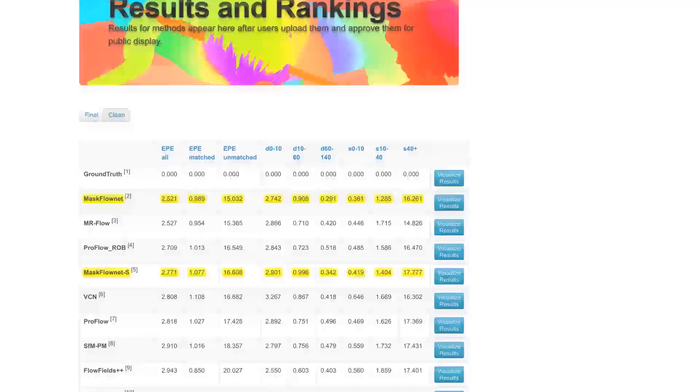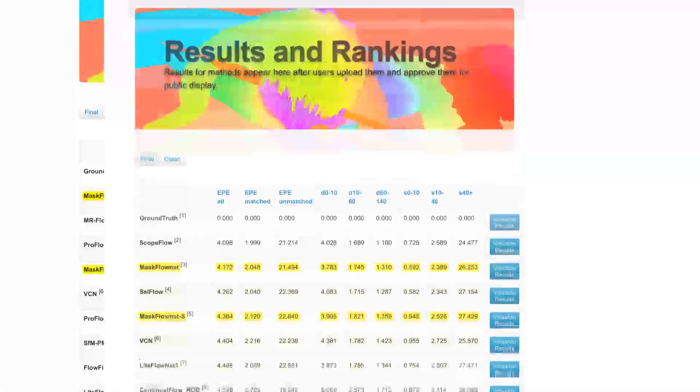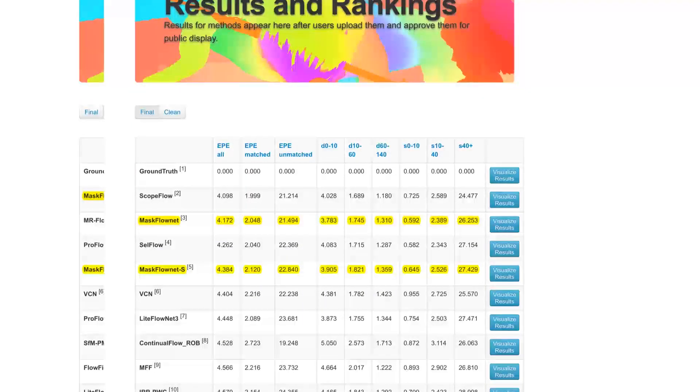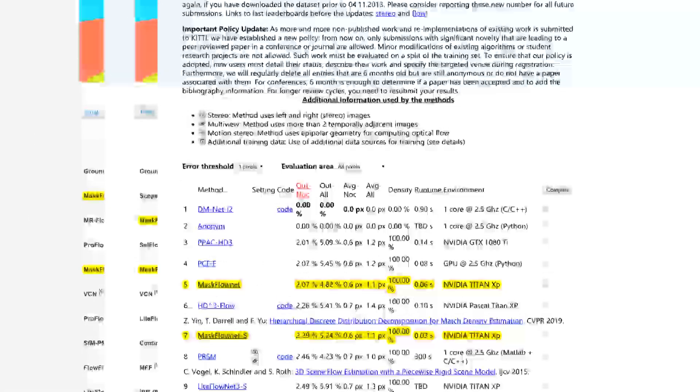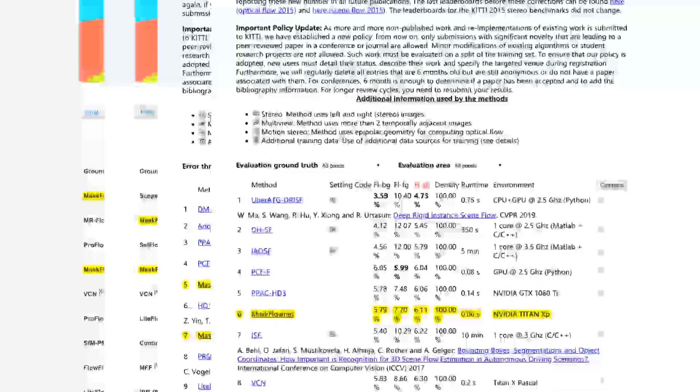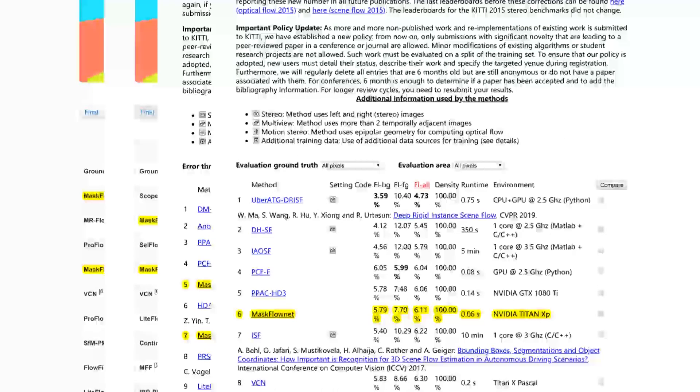At the time of submission, MaskFlowNet surpasses all published optical flow methods on MPI-Sintel on both clean and final passes, and KITTI 2012 and 2015 benchmarks, while using only two-frame inputs with no additional assumptions.